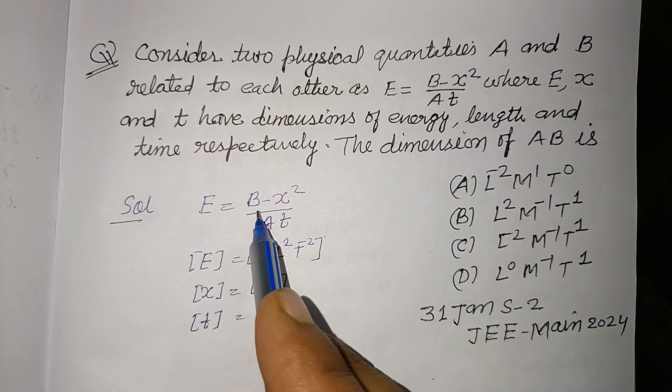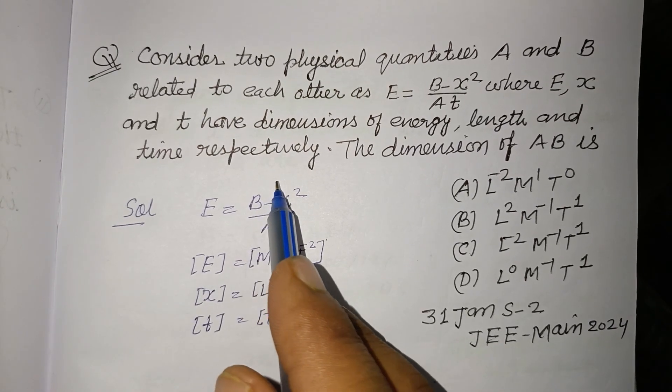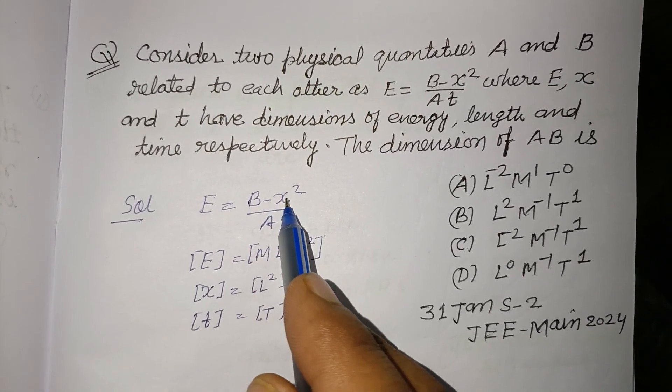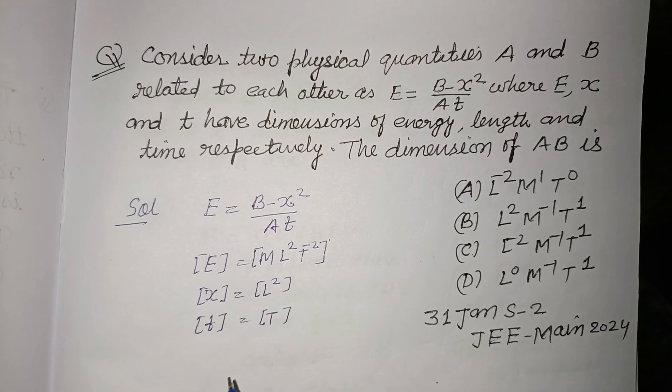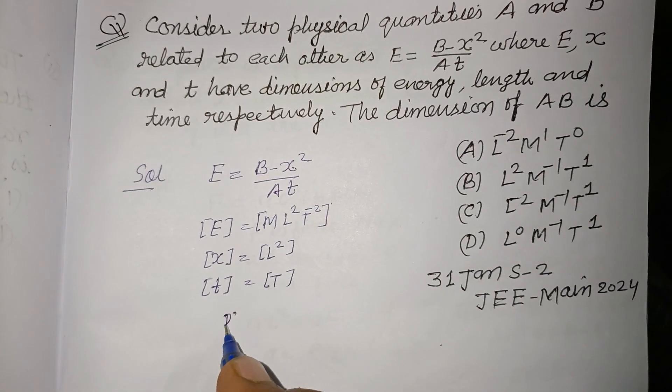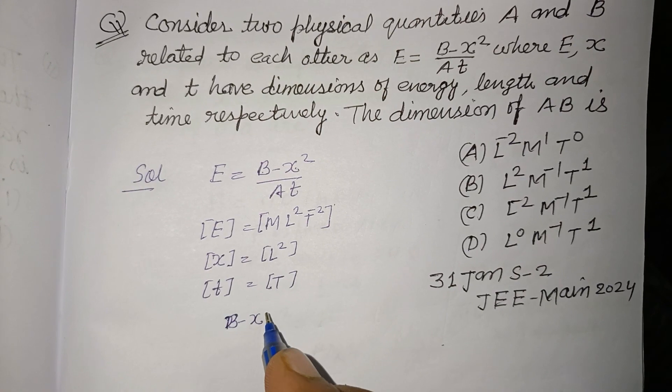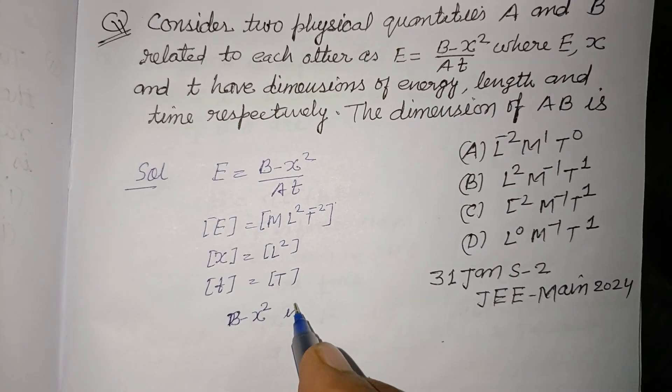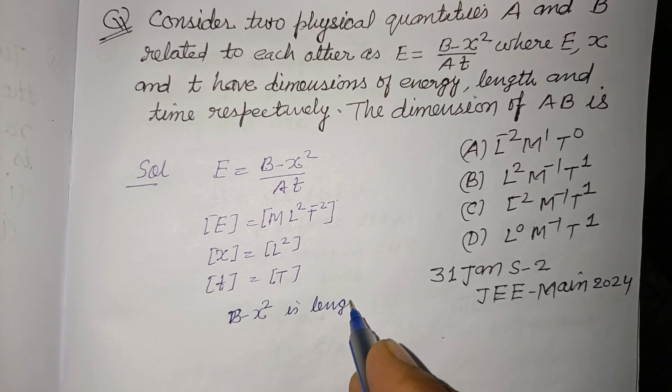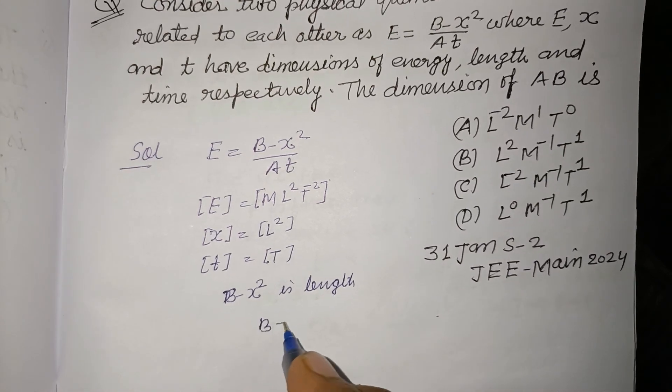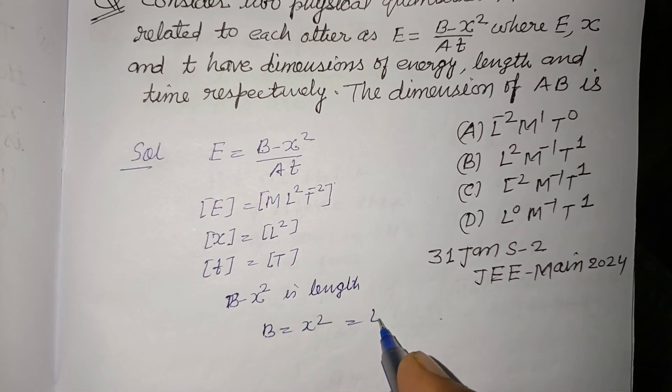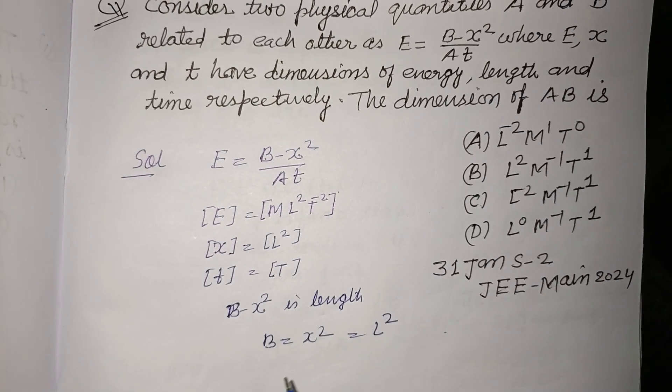Here E = (B - x²)/(At), so this x² is length. Therefore B is also length. So B - x² is length, so B = x² or L². So dimension of B is L².